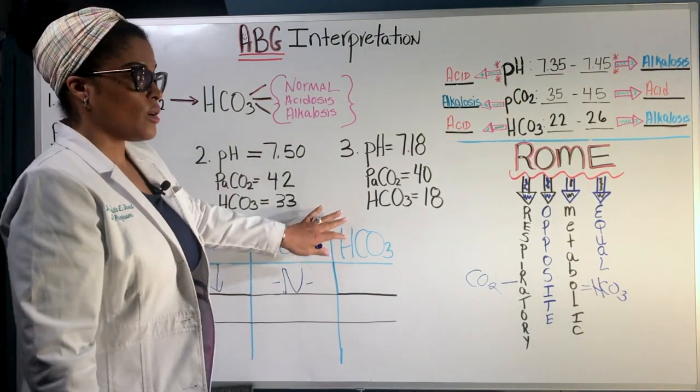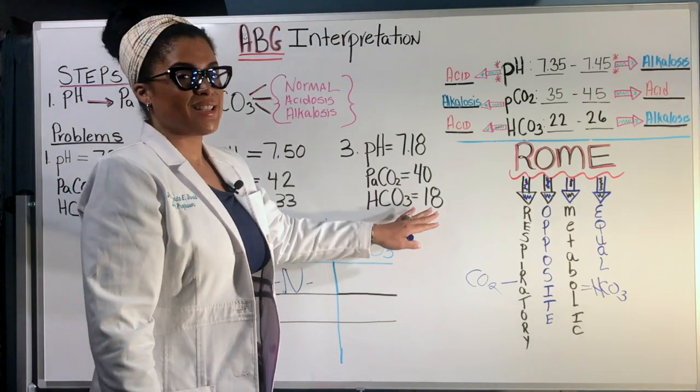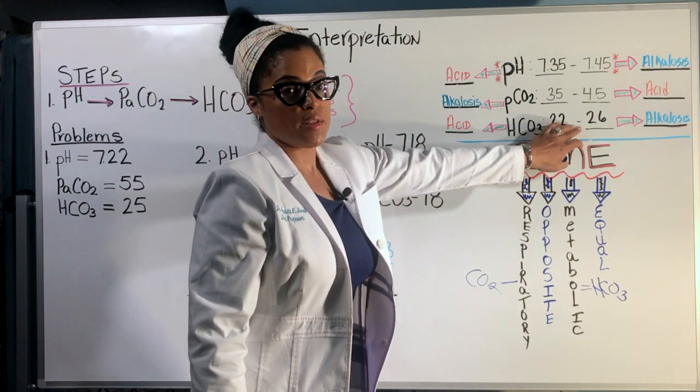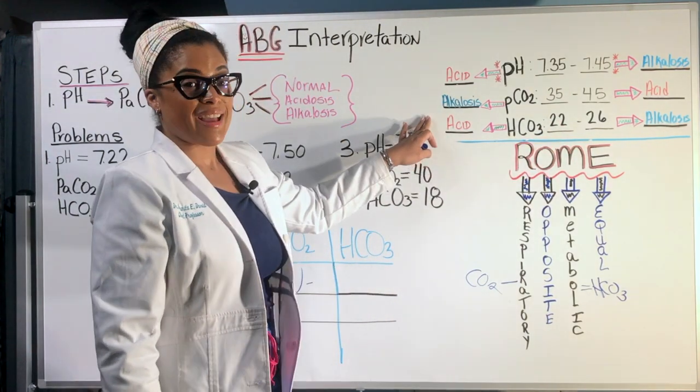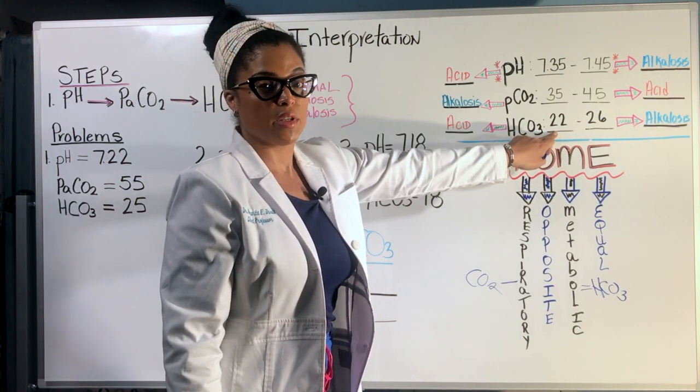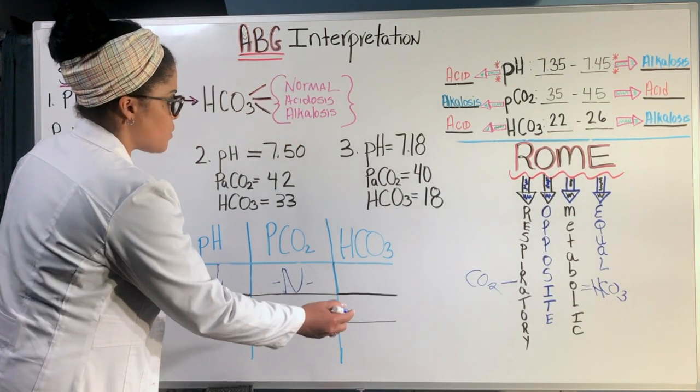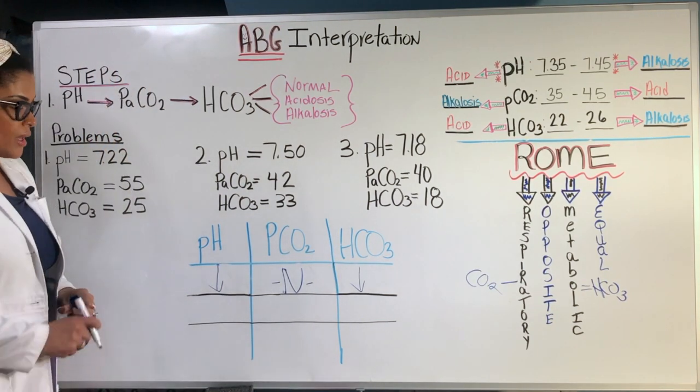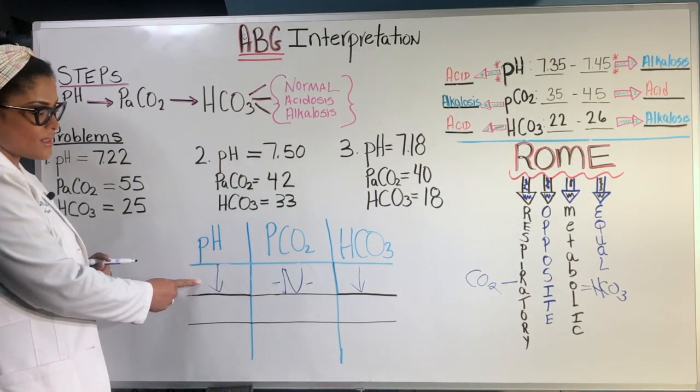Then we look at the bicarb. The bicarb in this example is 18. So looking at the range, which is 22 to 26 for bicarb, we notice that it is an acid because it is below the minimum number it should be of 22. So we put the arrow down. And as you see, the pattern is that the pH is low, which is an acid.